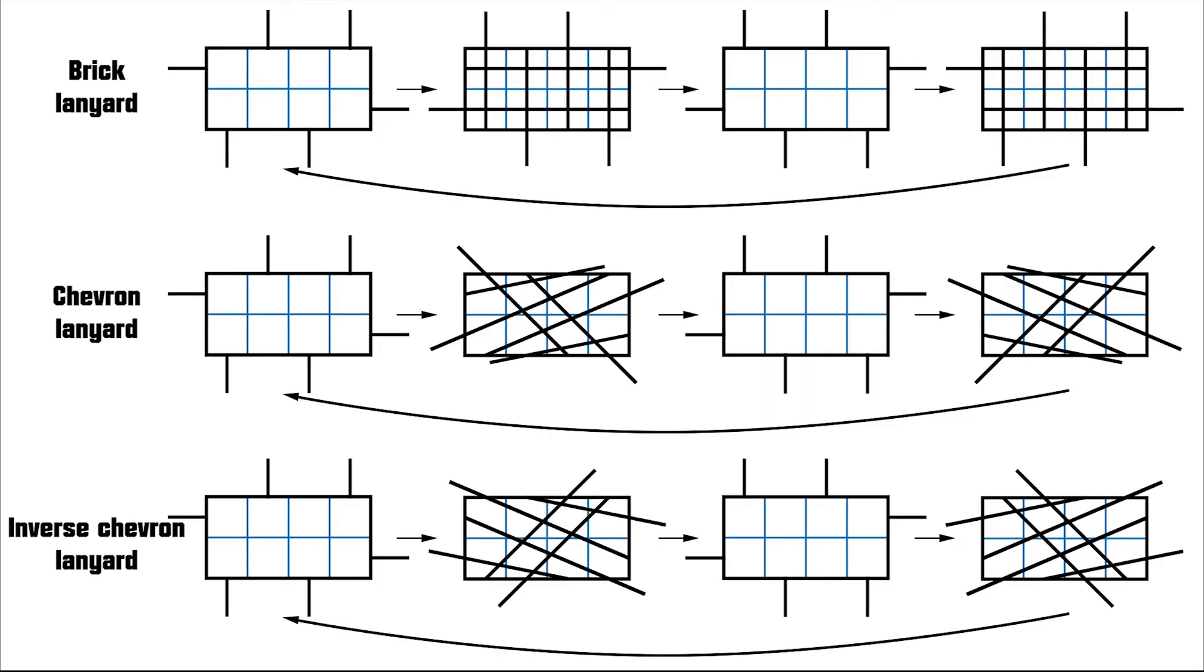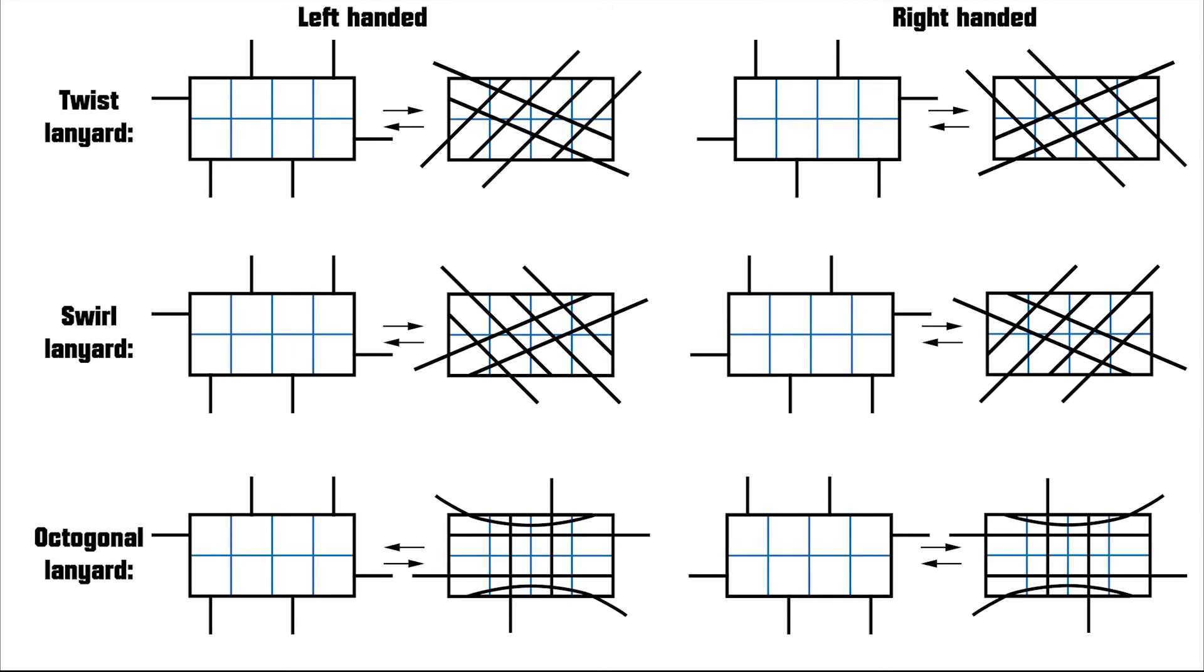The chevron and inverse chevron lanyards are similar to the brick lanyard, because they alternate through the left and right of the stitch. The swirl and the octagonal lanyards are similar to the twist lanyard,